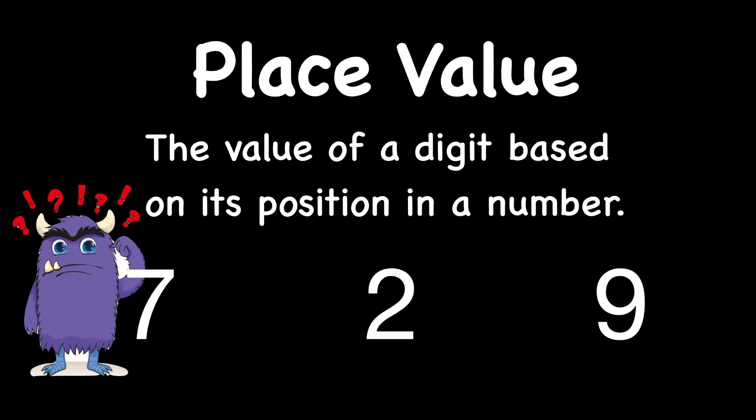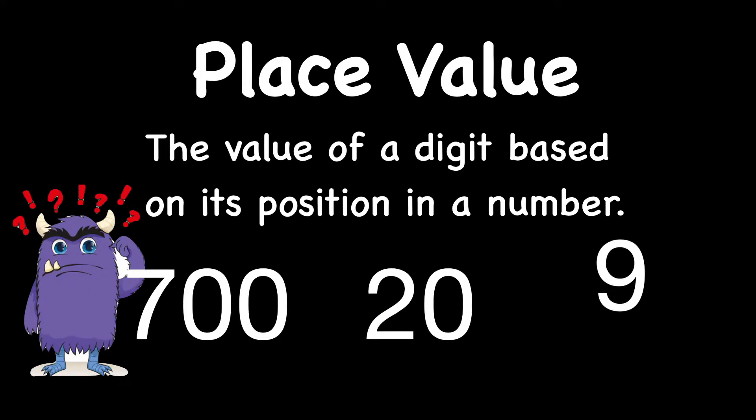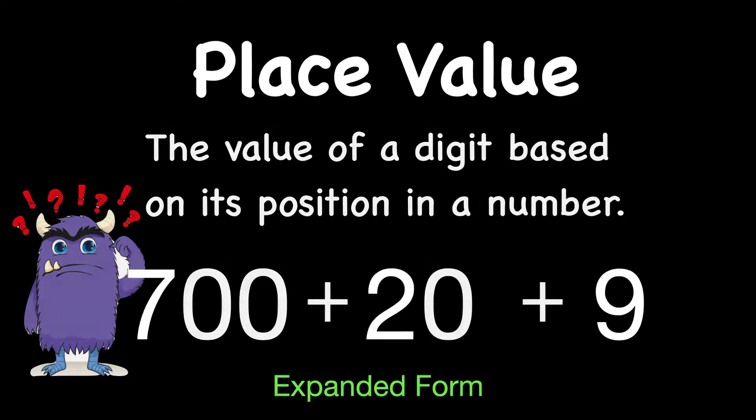Let's explode that and look at it separately. The seven on the left there is not just a seven. That's actually 700. In the middle, the two is not just a two. That's two tens or 20. And the nine on the right is just nine ones. If we were to put addition signs in it, we're showing that whole number with the different place values. That's called expanded form.